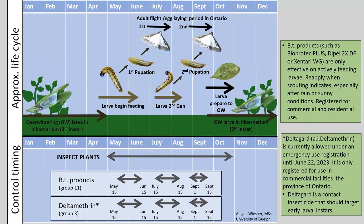Here we have that same information as an infographic. Abby has put together an excellent life cycle diagram, and at the bottom we've included the control option timings — essentially deltamethrin or BT products, really trying to target those early instars. Deltamethrin will have a bit better residual than a BT product, which opens up the coverage window a little, but it's really critical to target the correct stage for any product you're using. With BT, remember it doesn't have much residual — try not to apply it on a hot sunny day or before forecasted rain, as you'll need to shorten your reapplication window.